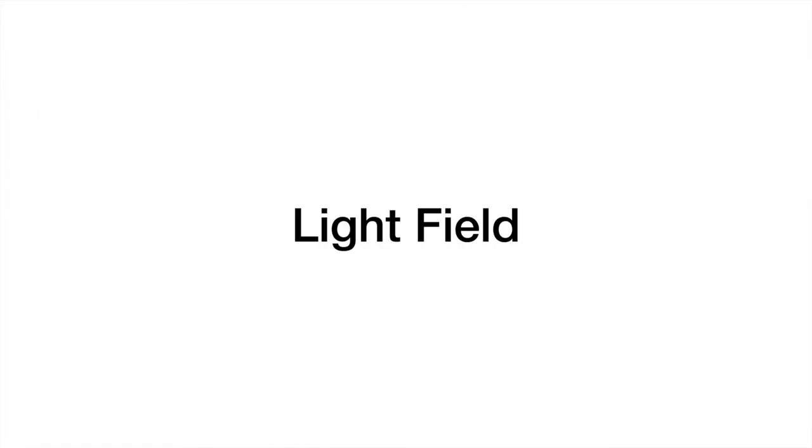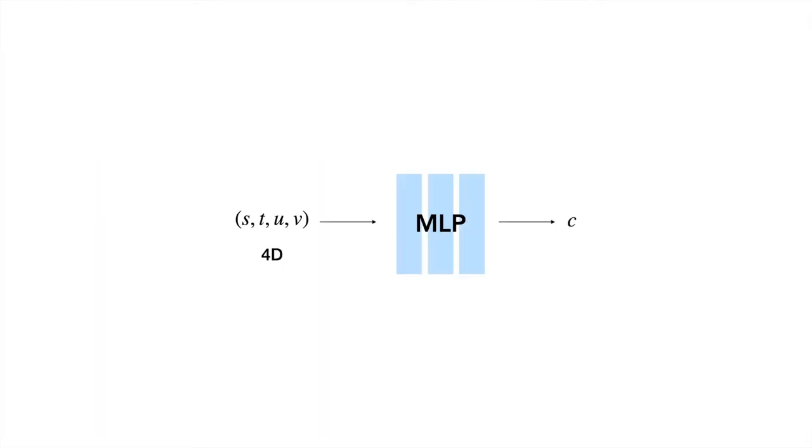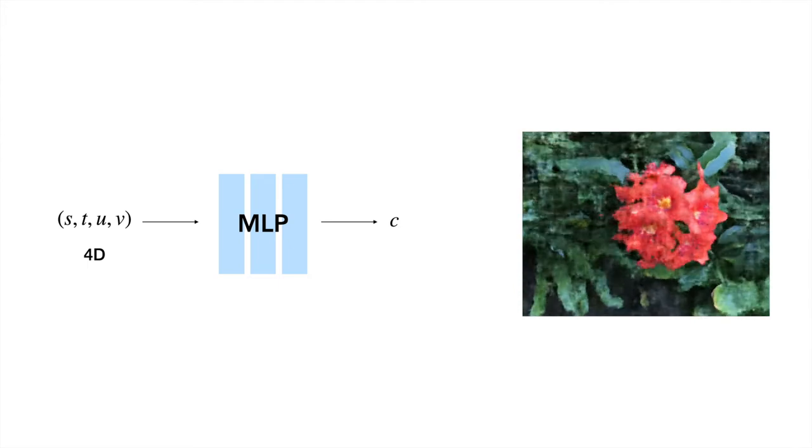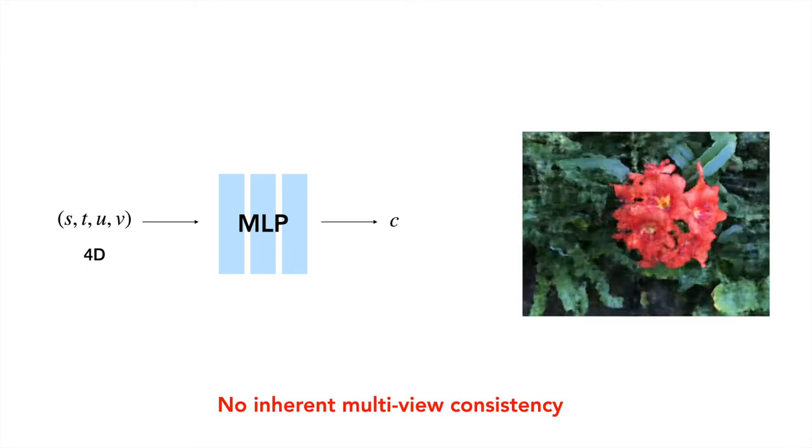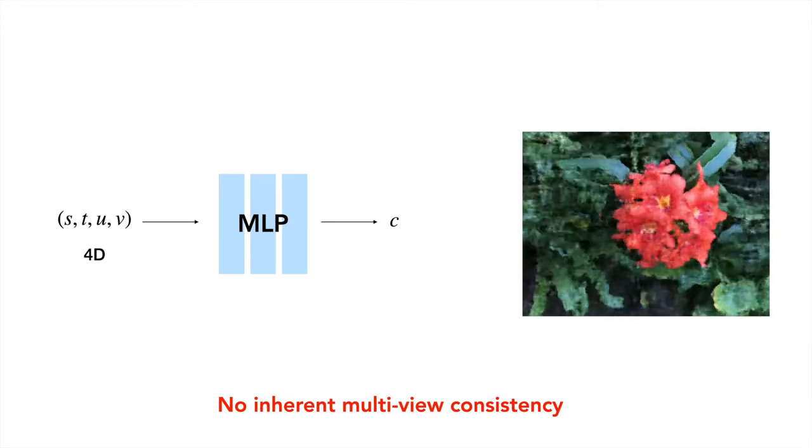Our method relies on Lightfield to represent a scene. Lightfields are vector functions on the space of oriented lines that associate a ray to a radiance value. While the Lightfield representation can be used to directly learn a mapping from a 4D tuple to color, such a model will produce low-quality renderings as shown here. This observation can be attributed to the fact that Lightfields do not have an inherent notion of multi-view consistency.